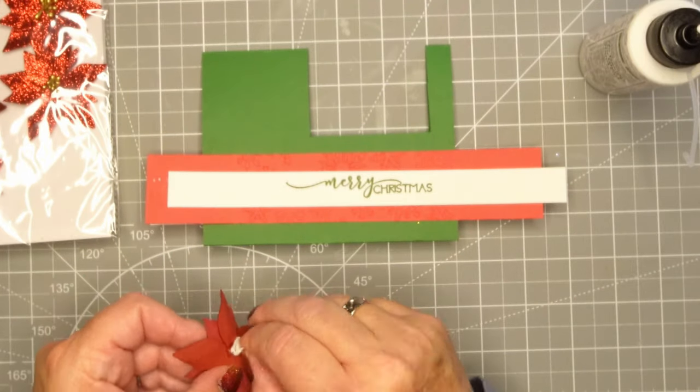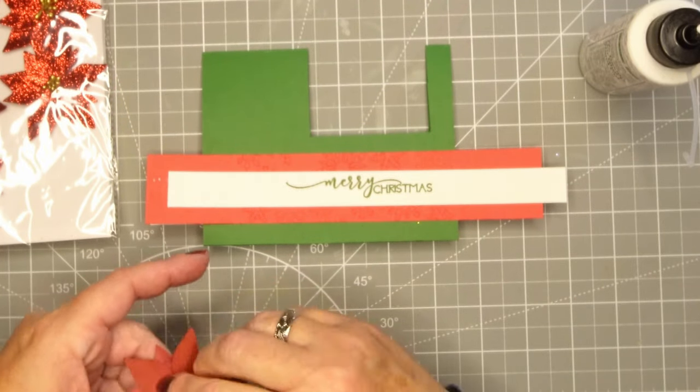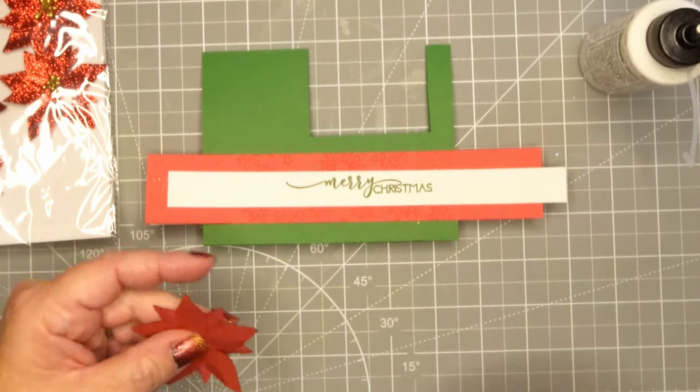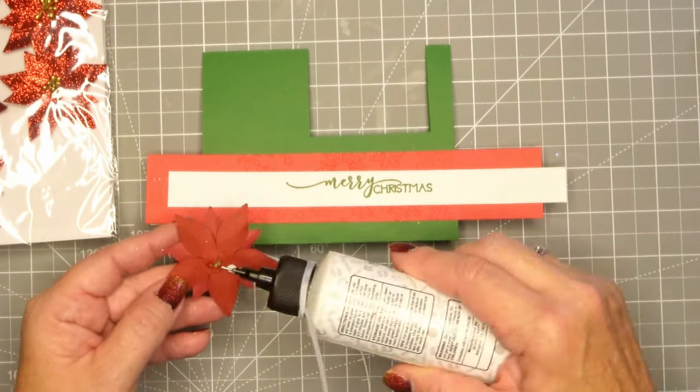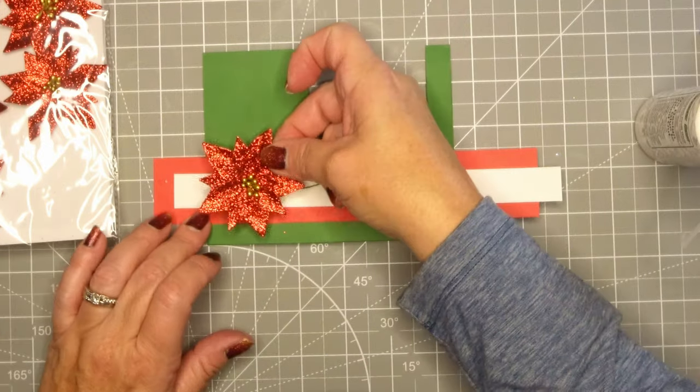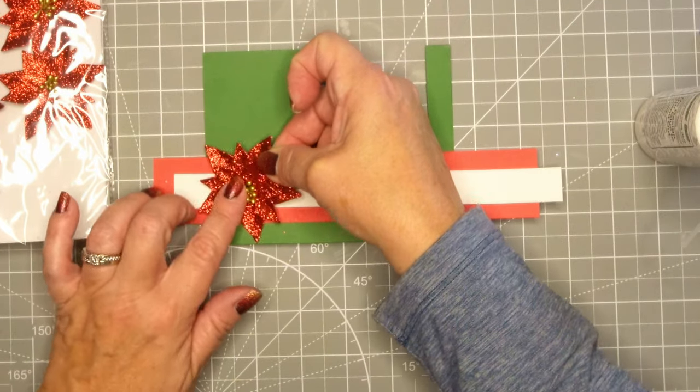And then I had these little poinsettia plant looking things. I have a little bit of foam on the back of them so I'm tearing that off because I don't need additional dimension there, and it made it a little bit flatter so I could put my glue on there and really press it down. But look how sparkly that is. Isn't that pretty? I got these stickers from Hobby Lobby.